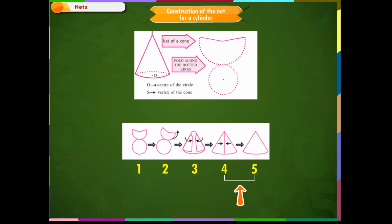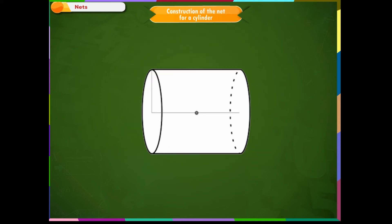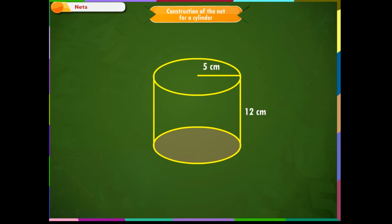Construction of the net for a cylinder. A solid object with two identical flat ends that are circular and one curved side is called a cylinder. Let us consider a cylinder as shown on the screen with height 12 cm and radius of the bases as 5 cm.